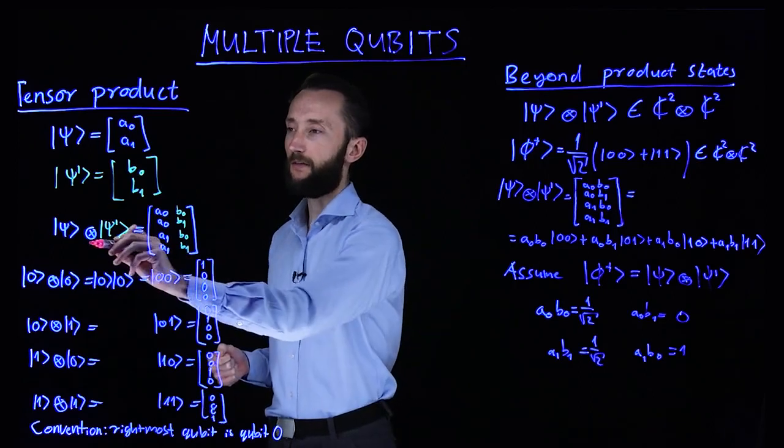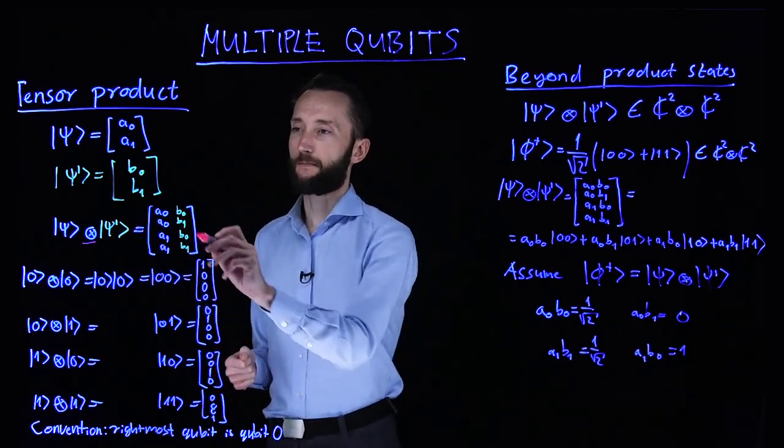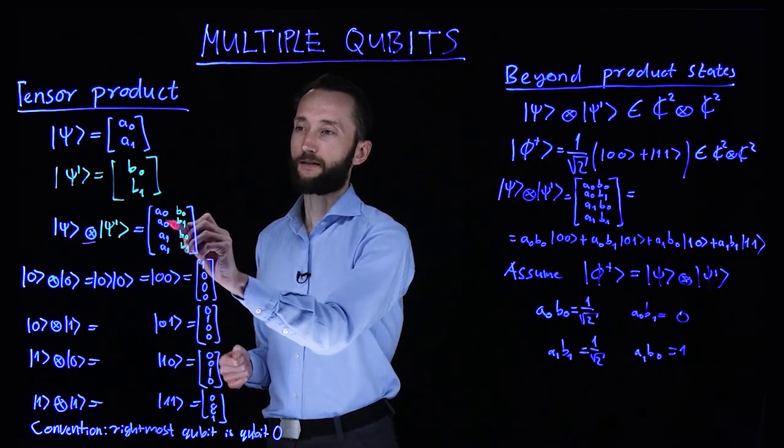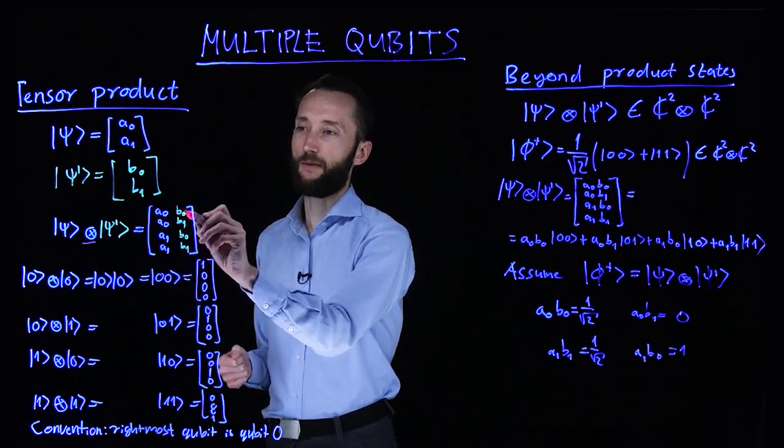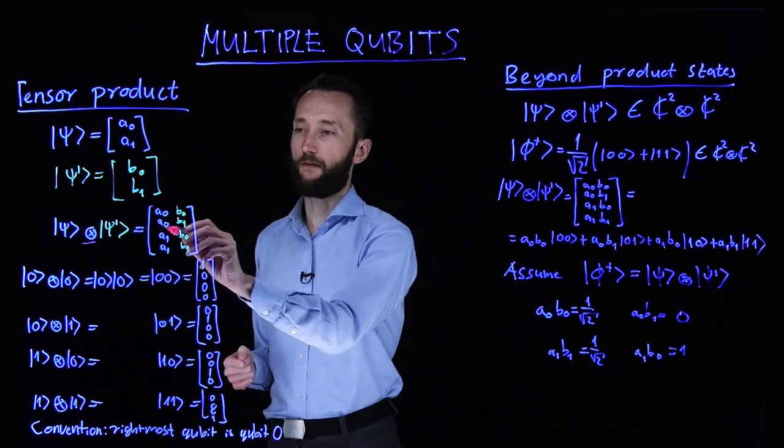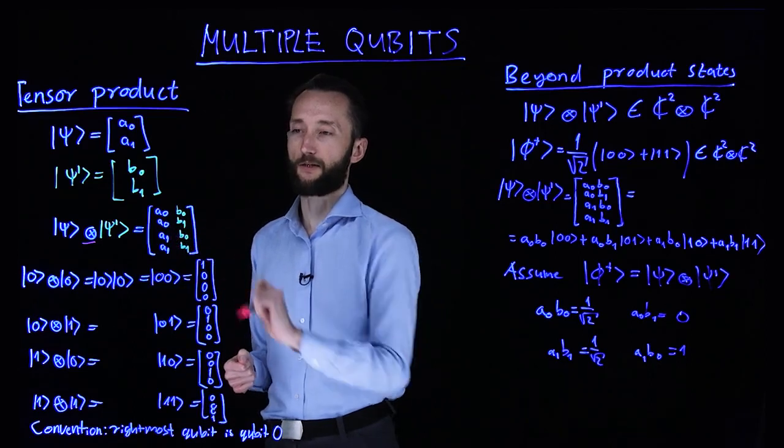Now then we can define this tensor product as this object. So first you have a0 times b0 as the first component, then you have a0 times b1, and a1 b0, and so on.